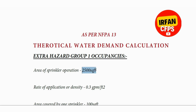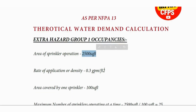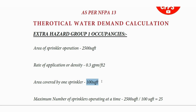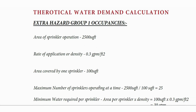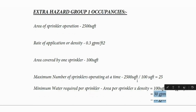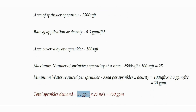For extra hazard group 1 occupancy, the design area will be 2500 square feet and the density will be 0.3 GPM per square foot. The area covered by one sprinkler is 100 square feet — this applies to either extra hazard group 1 or group 2. The maximum number of sprinklers operating at a time will be 25, and the sprinkler flow will be 30 GPM.